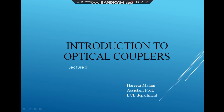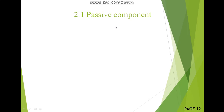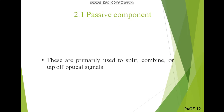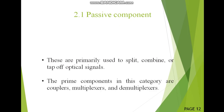A coupler is a device which transmits optical power, or which couples optical power and optical signal from one end to the other end. Before starting with optical couplers, I will discuss the passive components — what they mean, where they are used, and why we are studying them in this topic. Passive components are very important and they are primarily used to split, combine, or tap off optical signals. The prime components in this category are couplers, multiplexers, and demultiplexers.